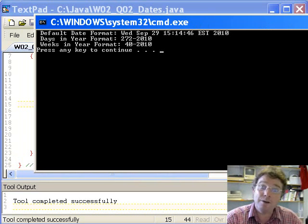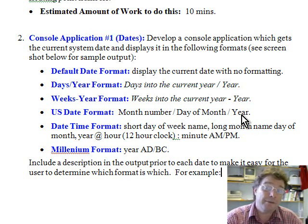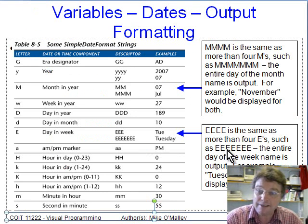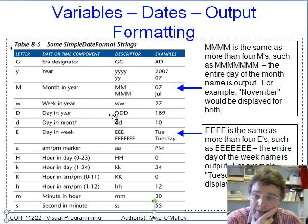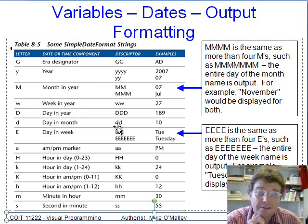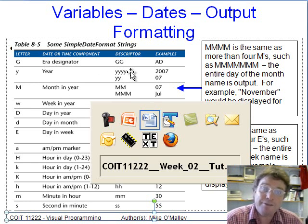The next format is US date format — month number, then day of the month, then year. For example: month 10, day 29, year 2010. The formatting flags needed are: 'MM' for month (two digits), then a slash, then lowercase 'dd' for day of month, then a slash, then four lowercase y's for the year. That gives you the date in US date format. I'll leave it to you to finish implementing that one.